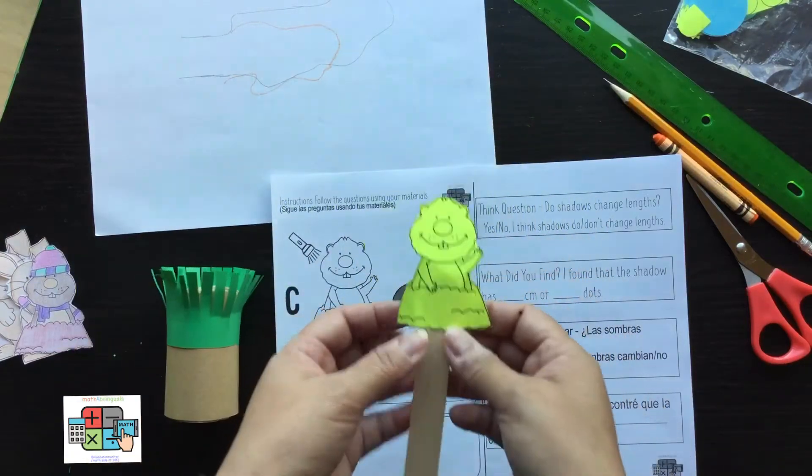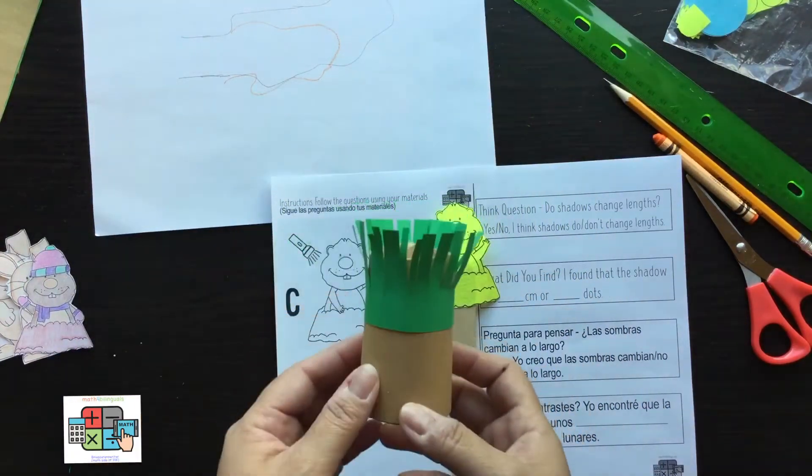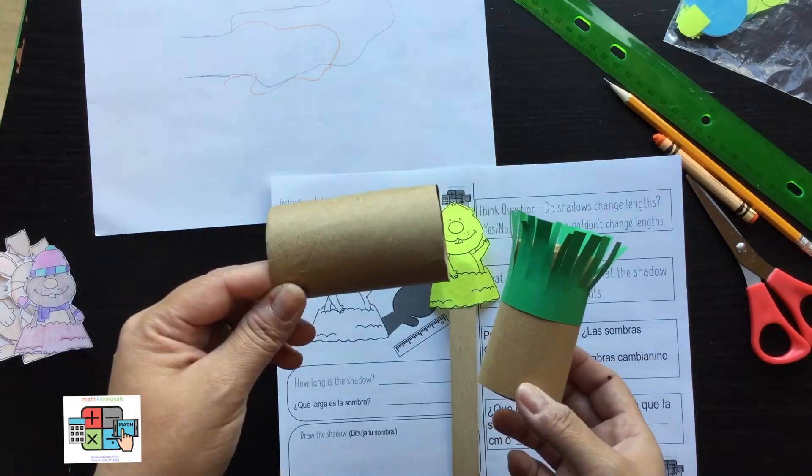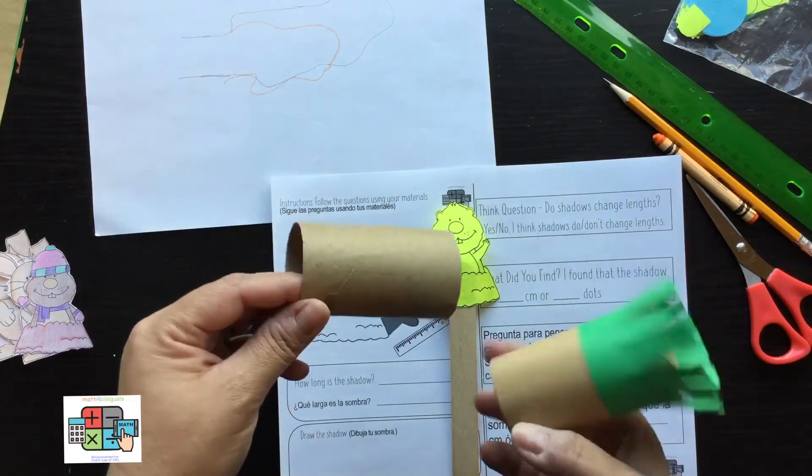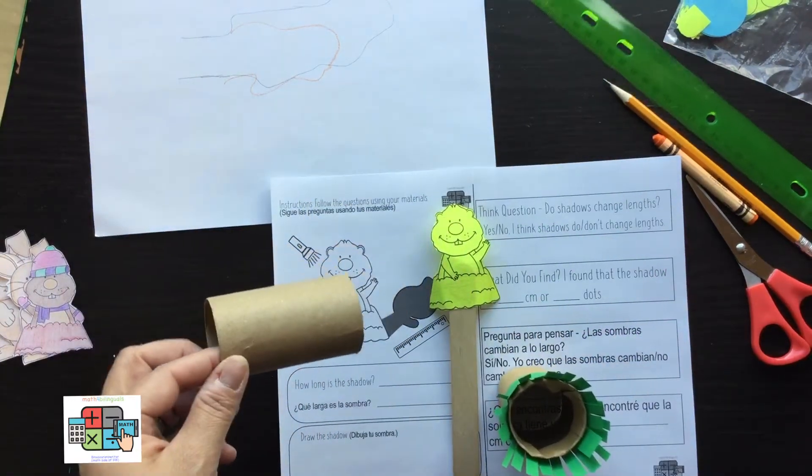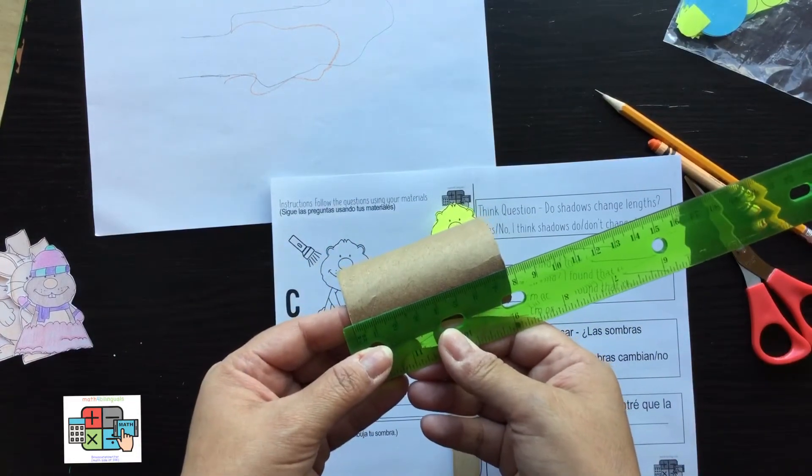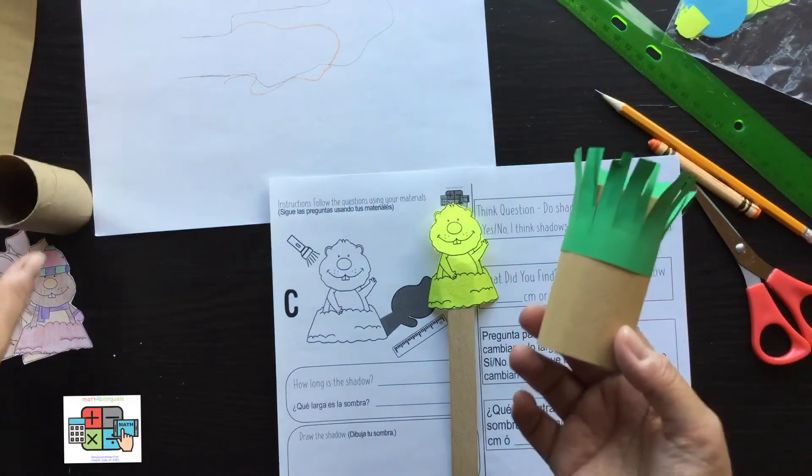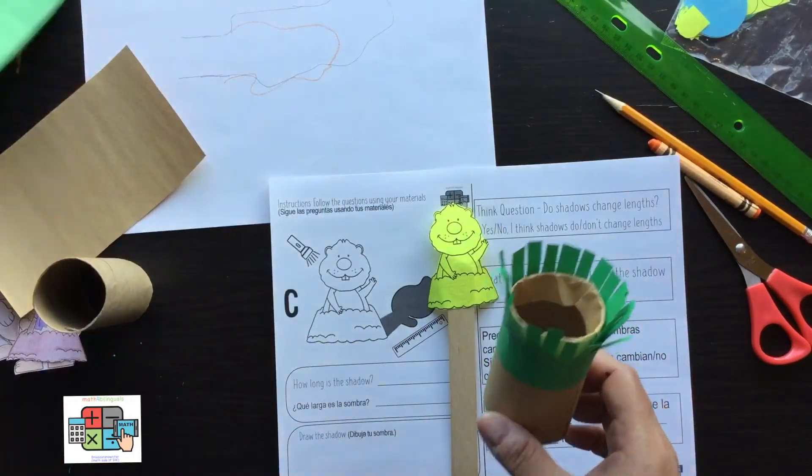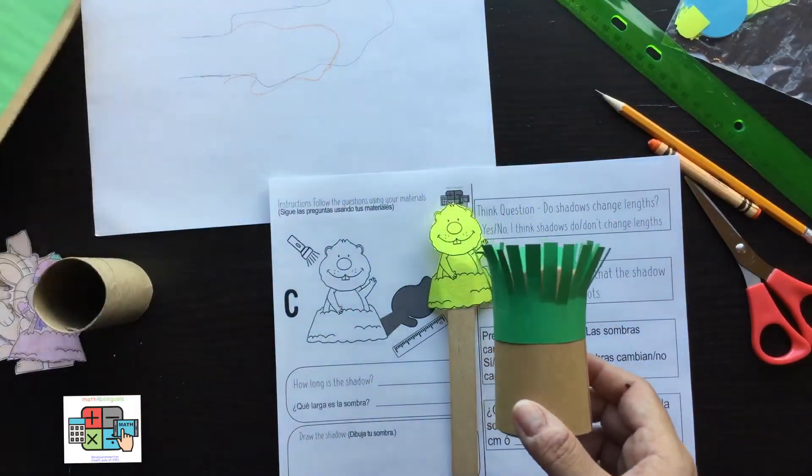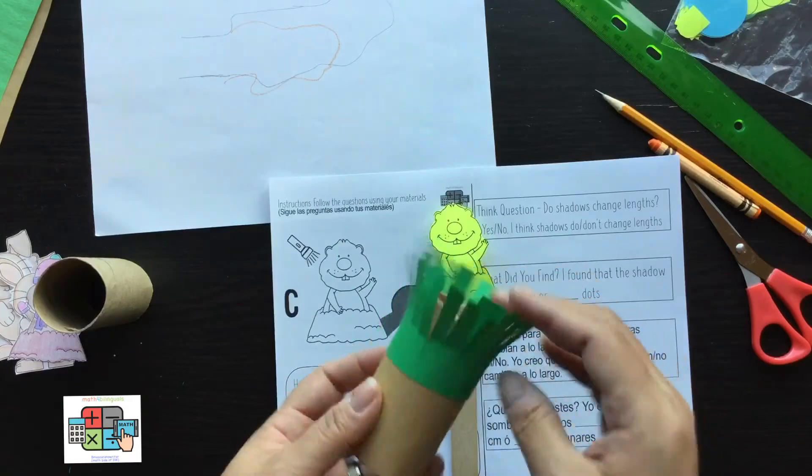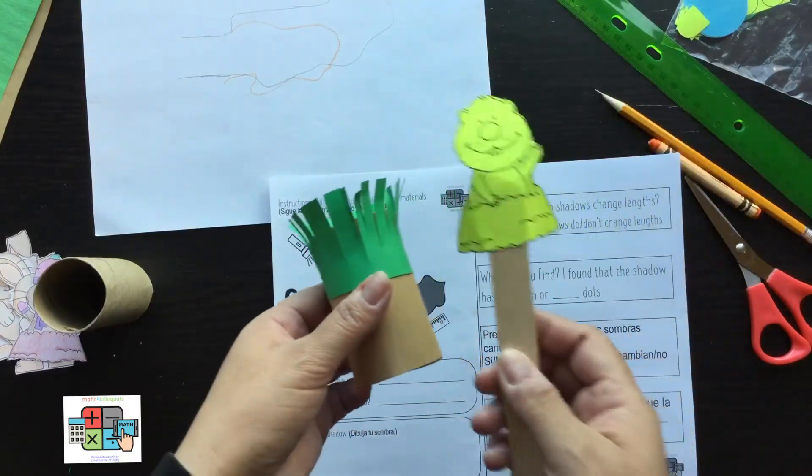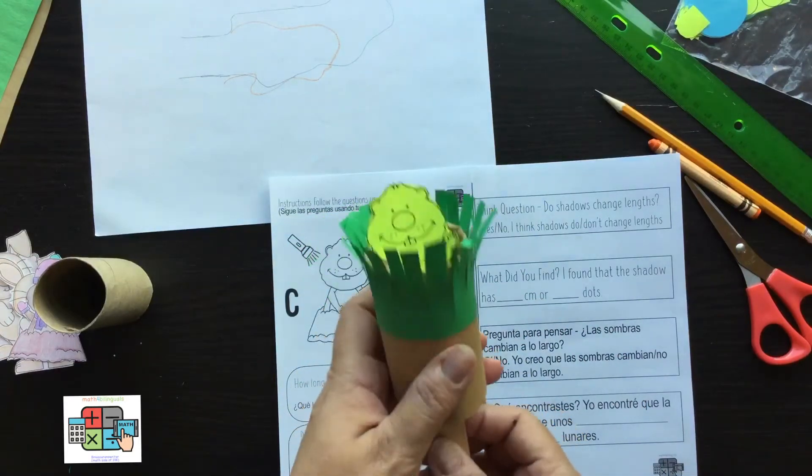What I did is cut it out and paste it onto a craft stick. Then I used an empty toilet paper roll or paper towel roll. You can cut this to about seven and a half centimeters—I think that's a good size. You can use construction paper or leave it brown, then have some green construction paper or printer paper and make little cutouts to look like grass.